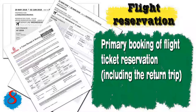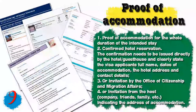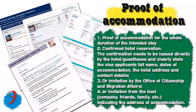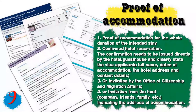Document number eight is a flight reservation - a primary booking of a flight ticket reservation must be presented, including the return trip. In some cases and for some countries this flight ticket must be confirmed. Document number nine is proof of accommodation - you need to provide proof of accommodation for the whole duration of stay. It should be a confirmed hotel reservation clearly stating the visa applicant's full name, dates of accommodation, hotel address, and contact details. If you don't have a hotel reservation, you will need an invitation from the office of citizenship and migration affairs or from a host such as a company, friends, or family, indicating the address of accommodation.